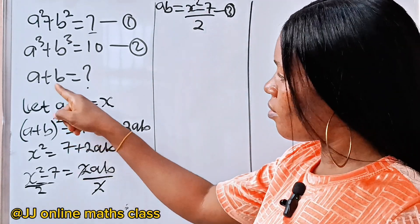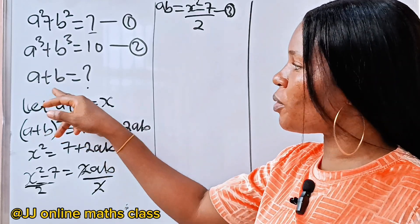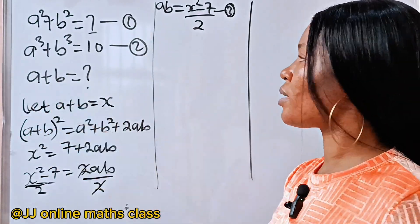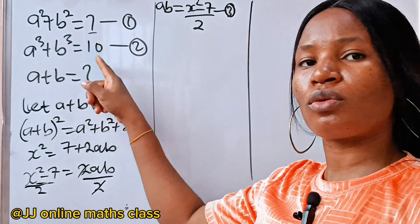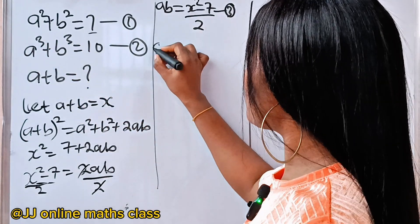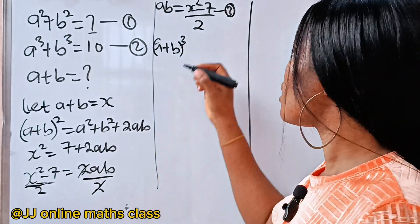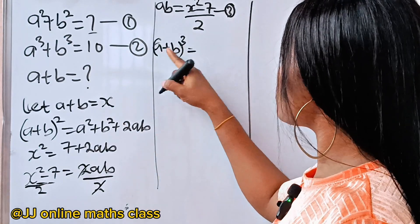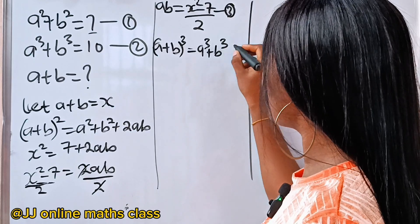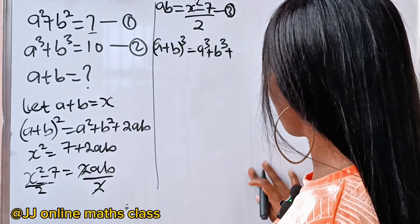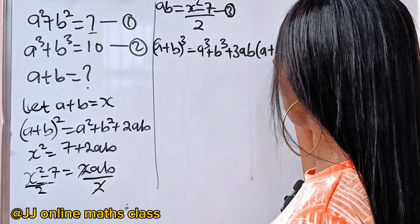We need to cube this as well. So once we cube it, we get another expression involving ab, and we also know the value of a cubed plus b cubed. So a plus b cubed is also an identity: it's equal to a cubed plus b cubed plus 3ab times bracket a plus b.